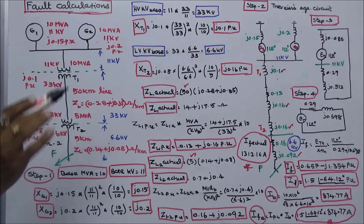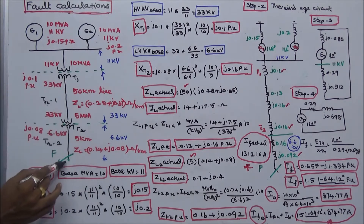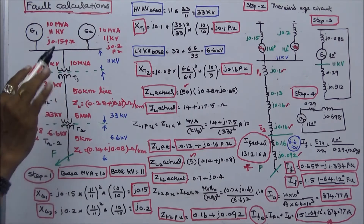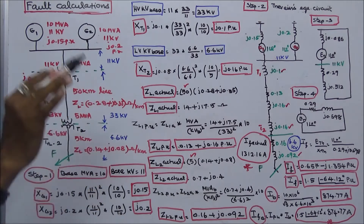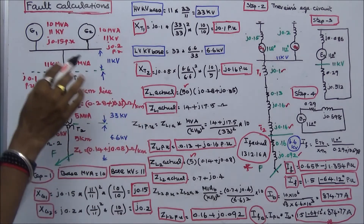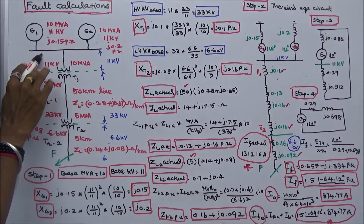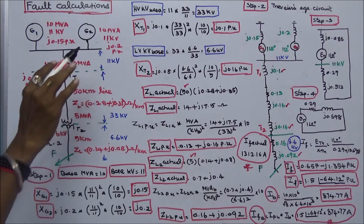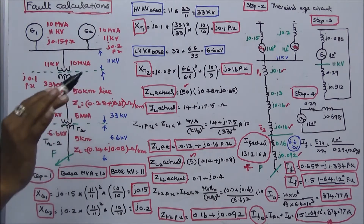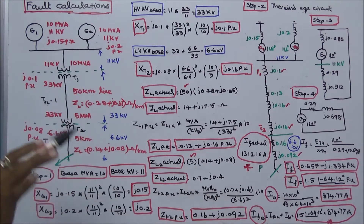A fault occurs at the indicated point. Calculate the fault current and also calculate the 11 kV bus voltage during the fault. That is the question.